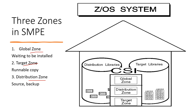The last one is the distribution zone. Each CSI can have multiple distribution zones. These zones describe the content of distribution libraries. This zone holds the master copy of all components of the operating system. For example, it is used to restore the target library when maintenance was improperly applied.